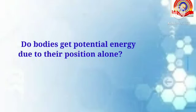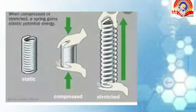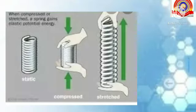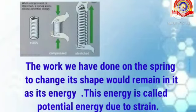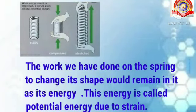Do bodies get potential energy due to their position alone? In this figure you can see a spring with a wooden block. When the spring is compressed or elongated, it gets the ability to do work on the wooden block. Aren't we doing work on the spring when it is compressed or elongated? The answer is yes — we are doing work, and this work helps to change its shape. The work done on the spring to change its shape remains in it as its energy, called potential energy due to strain.